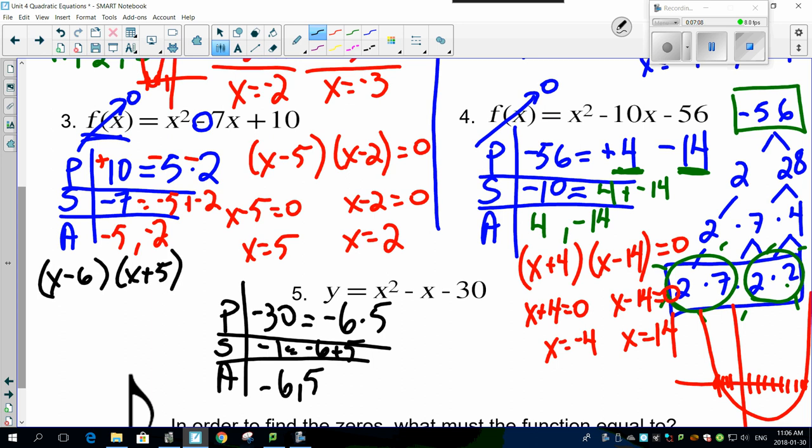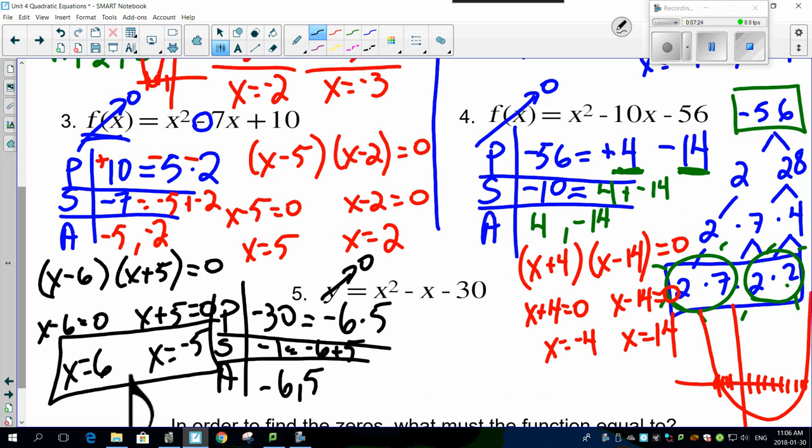So going over here: (x - 6)(x + 5). And you know that, again, to find a solution that has to equal zero. x - 6 = 0, x + 5 = 0. Then you'll find out x = 6 and x = -5. Those are your solutions and your intercepts of the graphs.